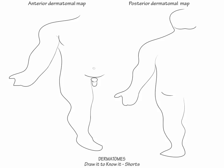Start with the hand. Show that C7 covers the middle finger, C8 the medial hand, and C6 the lateral hand and lateral forearm.